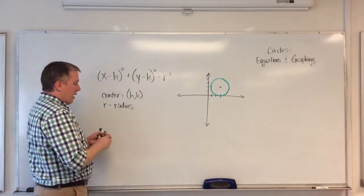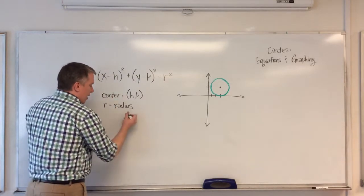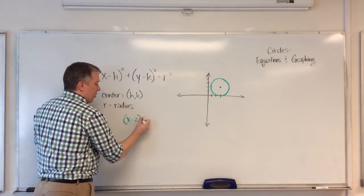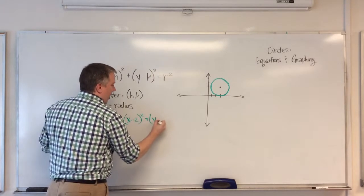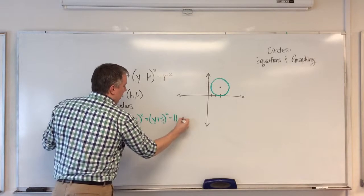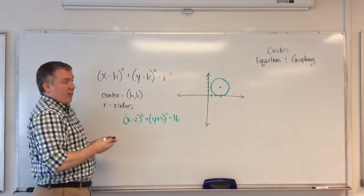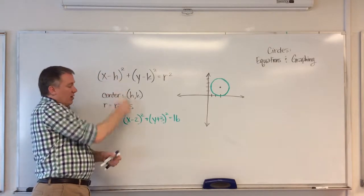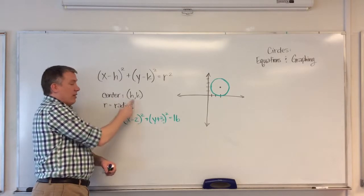So if I were to have an equation that says x minus 2 squared plus y plus 3 squared is equal to 16, well then to follow this pattern, x minus h, well if that's minus 2, then h is 2.